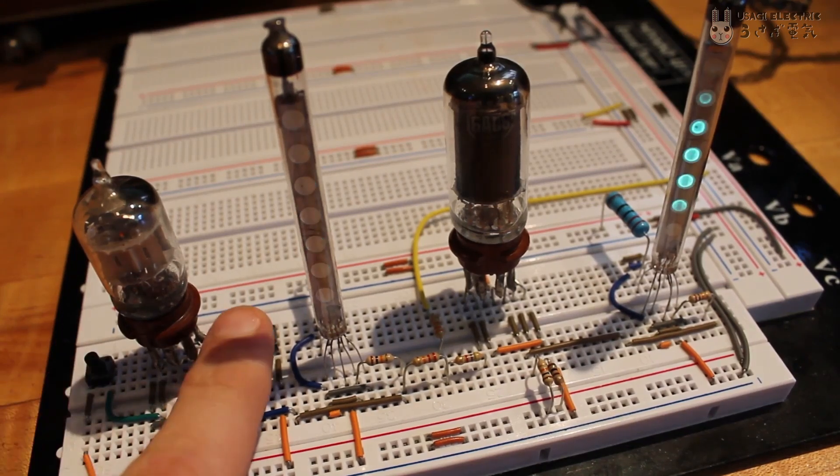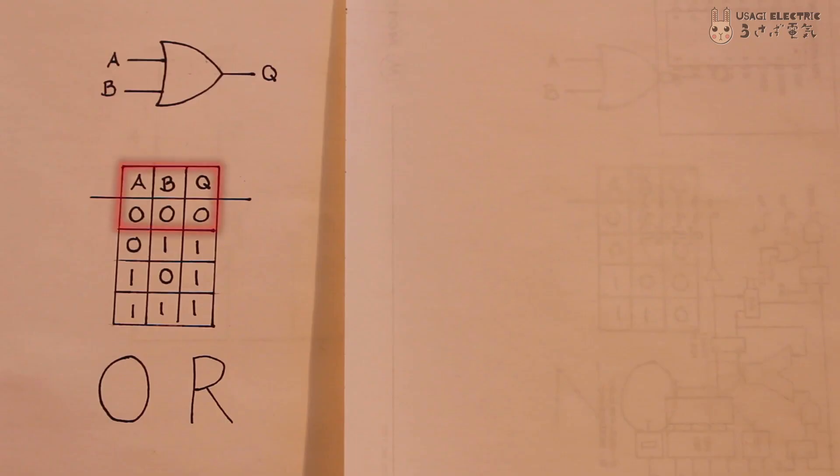Let's build some logic gates without using any silicon. In an OR gate, the output is low if both inputs are low. However, if one or both of the inputs go high, the output will also go high.